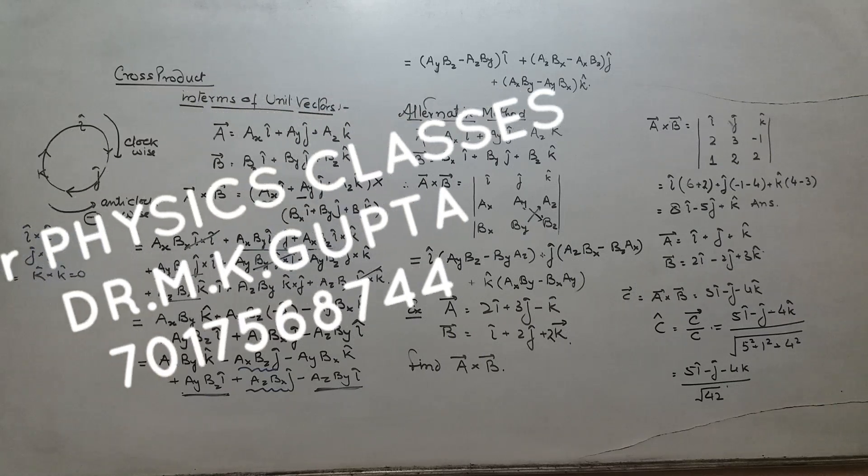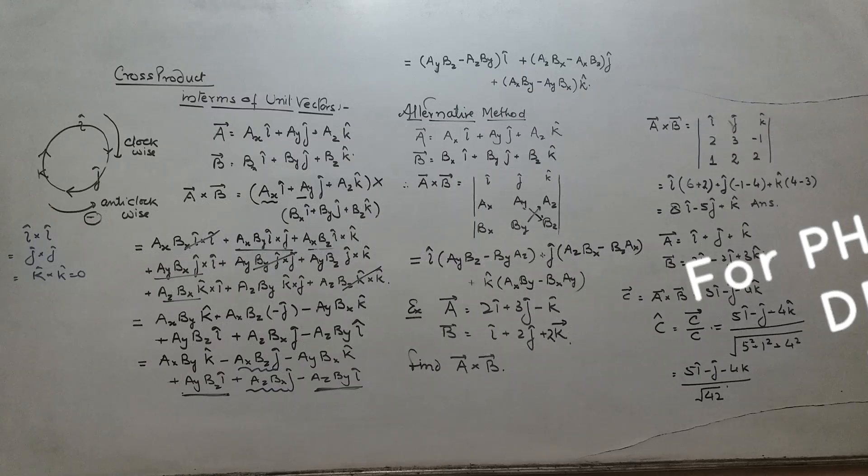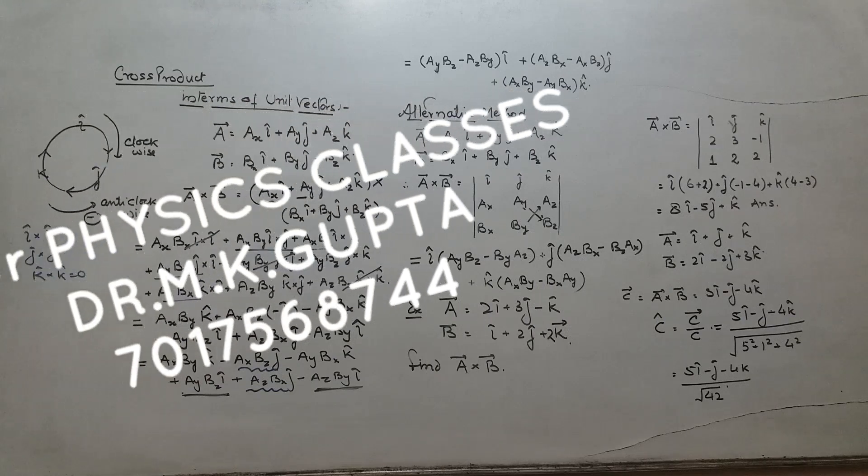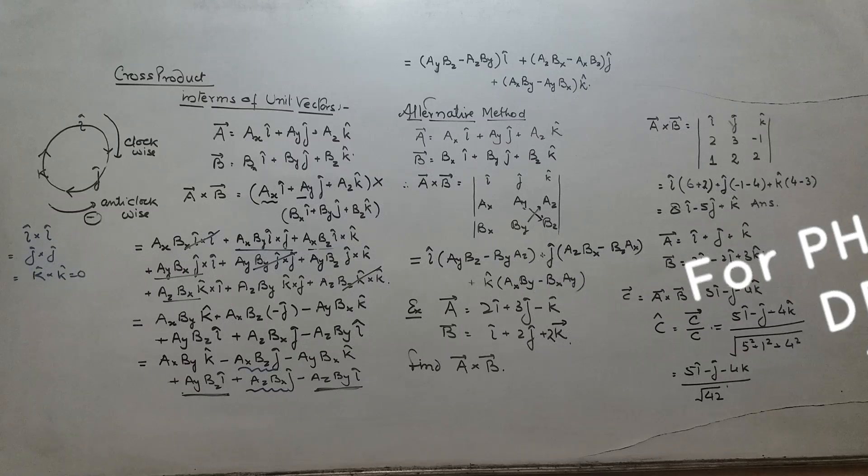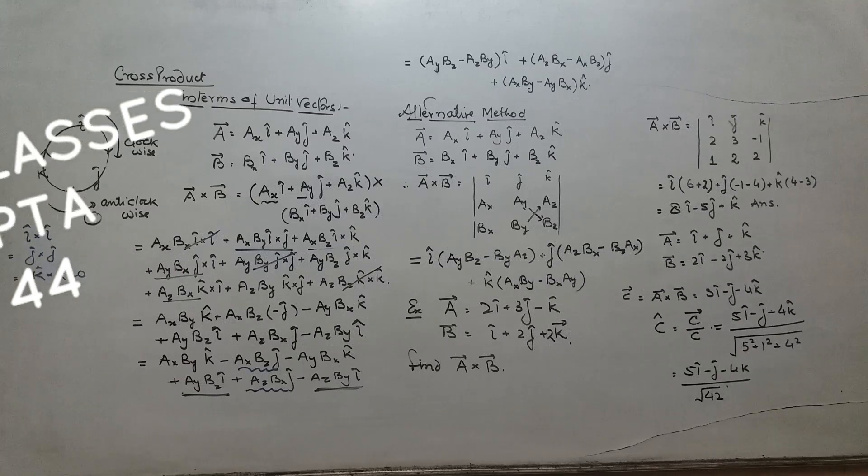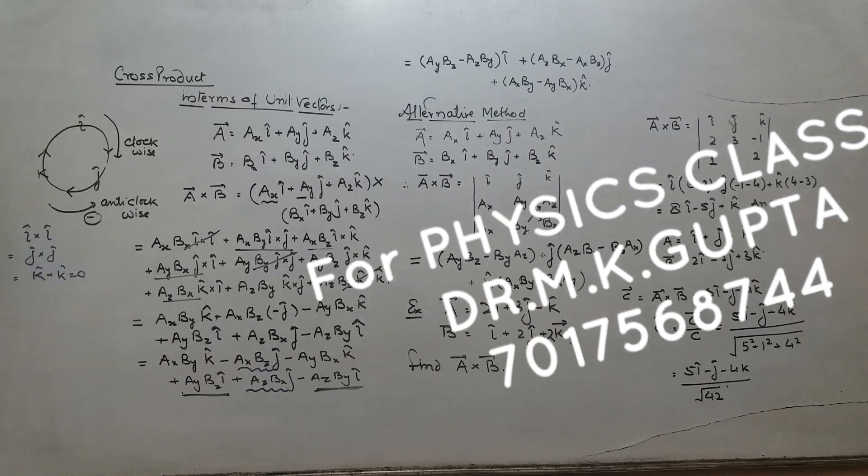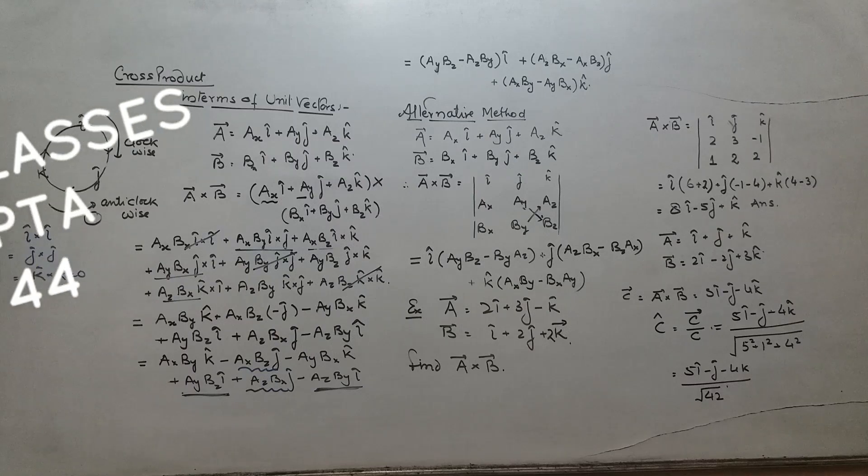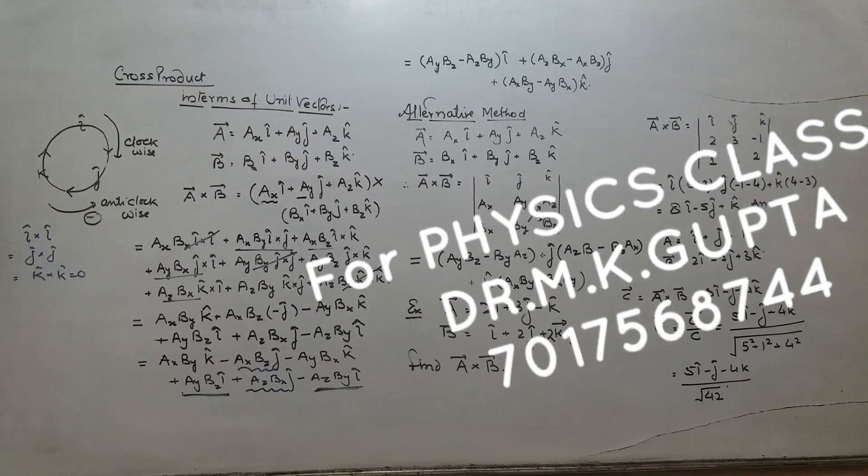The alternative or you can see the shortcut to calculate cross product of two vectors is shown before you in the determinant form. A vector cross b vector is equal to determinant form you write, then i j k, below i you will write the x component, j y component, k z component. Similarly, we shall write for b vector.